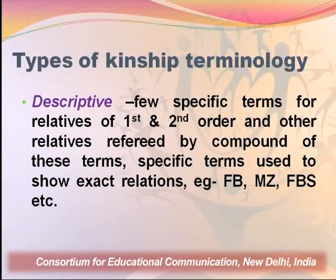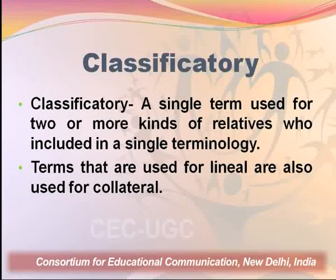In a descriptive terminology, lineal and collateral kin are separated. For example, mother and mother's sister, although of the same generation and sex, are distinguished. There is clarity in terms of relationship — each term connotes the exact relationship an individual has with the kin. The advantage of descriptive terminology is that it is less ambiguous, and distant relatives can be identified easily — up to the fifth order, we can actually trace the exact step-by-step relation to that individual. The second form of kinship terminology is classificatory. In a classificatory kinship terminology, a single term is used for two or more kinds of relatives who are included in a single category, and terms used for lineal kin are also used for collateral kin.